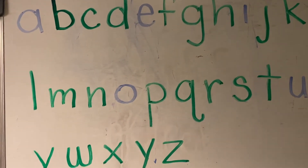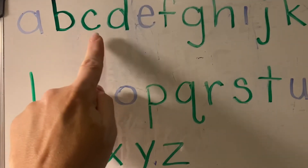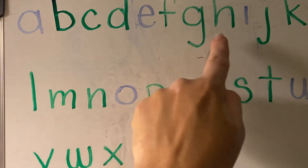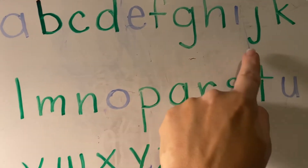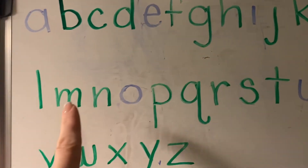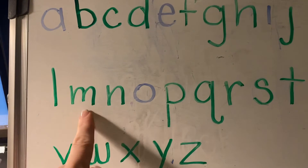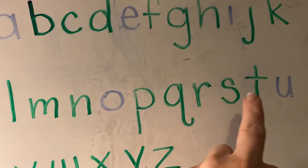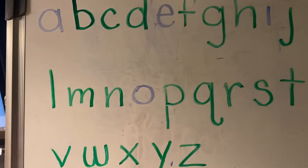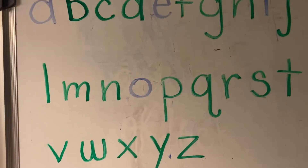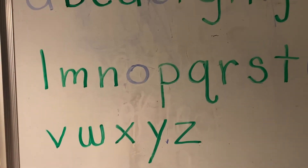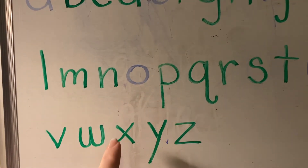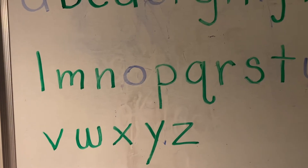The rest of the letters in green — B, C, D, F, G, H, J, K, L, M, N, P, Q, R, S, T, V, W, X, Y, Z — all of these letters are called consonants.